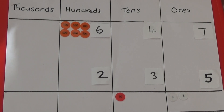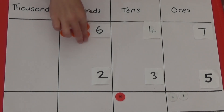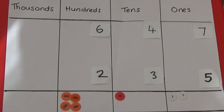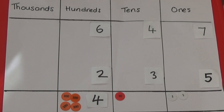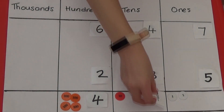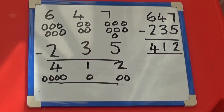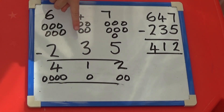Finally, I'm going to subtract the two hundreds from the six hundreds and bring the remaining four hundreds down to the answer box. So, 647 minus 235 equals four hundred and twelve. We can show this by drawing out the counters.